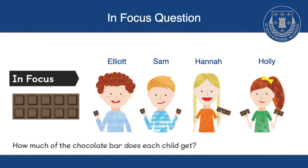Elliot has got one piece, Sam's got two pieces, Hannah's got three pieces and Holly's got four pieces. But if we was to say how much of the chocolate bar does each child get in a fraction, that's different to how many pieces.